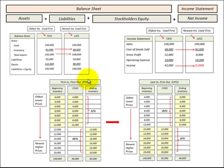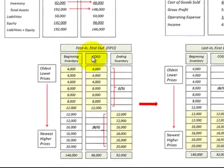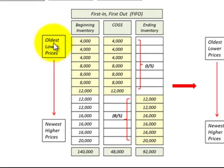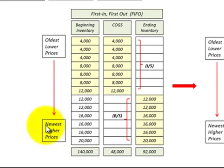Now we're going to make a comparison between FIFO and LIFO by looking at changes on our balance sheet and income statement. For this comparison we're using the same tables with cost of goods sold and inventory amounts from our previous examples, where our oldest or lower-cost inventory was listed on the top of the table, and as we move down, we have our newest inventory with the highest prices. Our model is based on rising costs and rising prices.